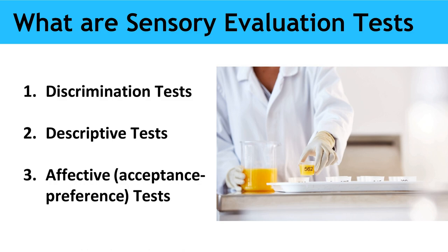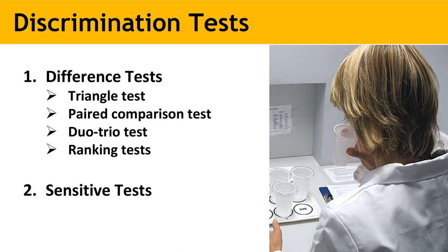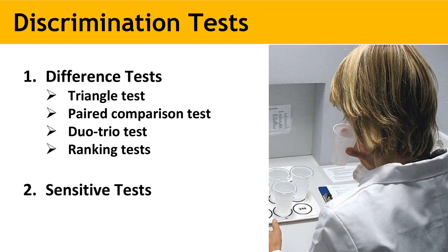Discrimination tests are divided into two groups: difference and sensitivity. Difference tests are used to determine if there is a difference between or among samples. The methods of discrimination testing commonly used are the paired comparison, triangle, duo-trio, and ranking tests.